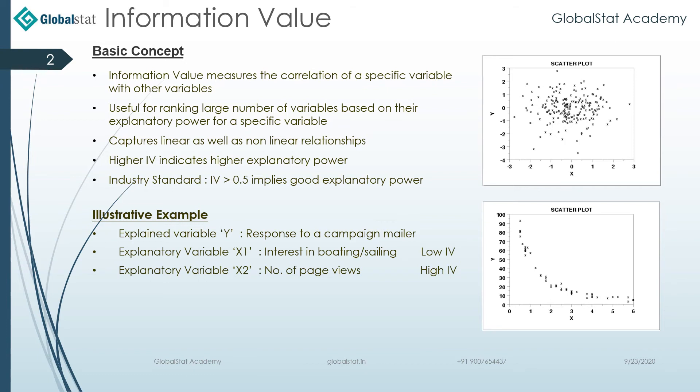In industry standard, the IV should be greater than 0.5, which implies that a particular metric is having a very good explanatory power.